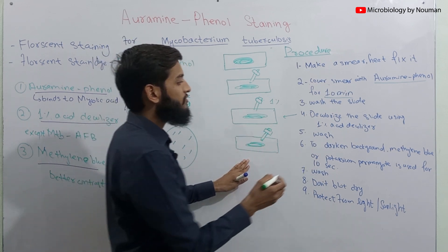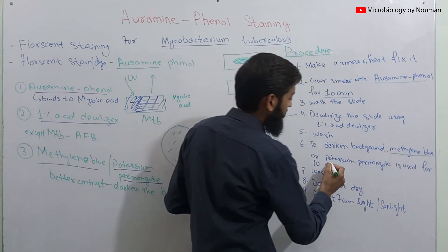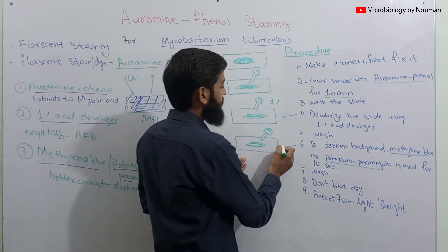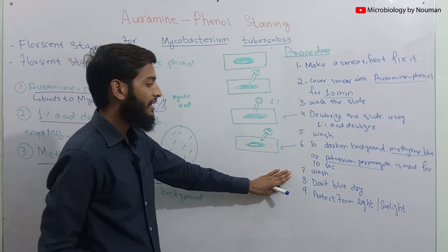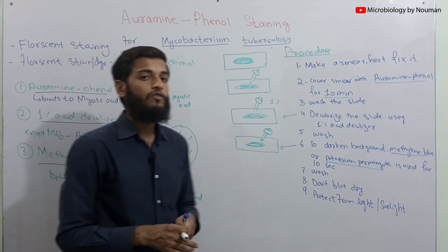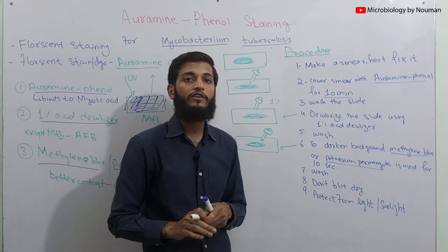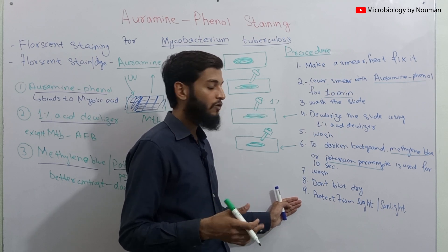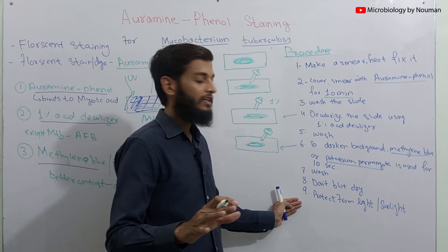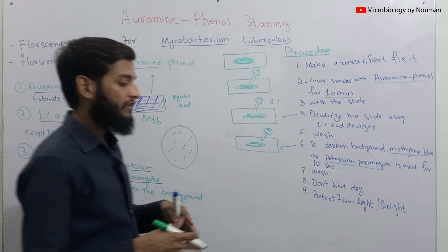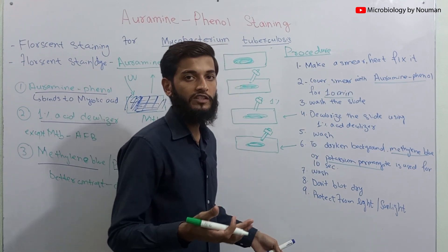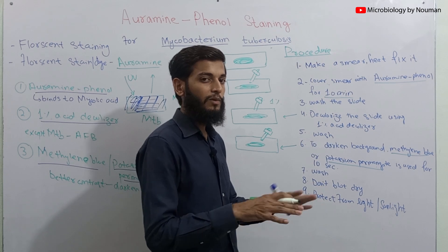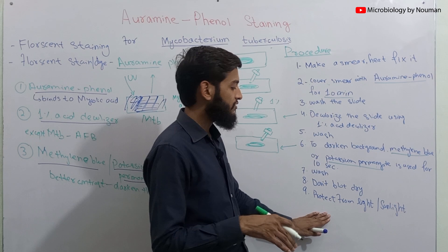To darken the background, we cover the slide with either methylene blue or potassium permanganate for 10 seconds, then wash the slide. We air dry the slide — we never use blotting paper for any staining involving Mycobacterium tuberculosis. The last and most important step is protecting the slide from direct sunlight or any light, because the fluorescent stain can fade. We keep the slide in a dark box to protect it.